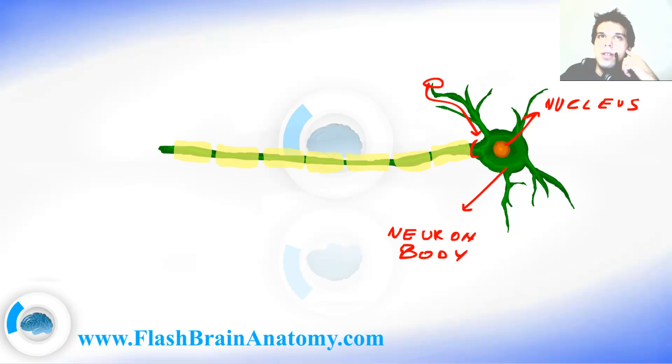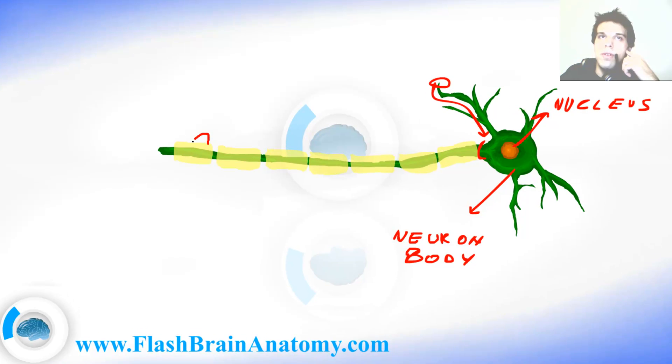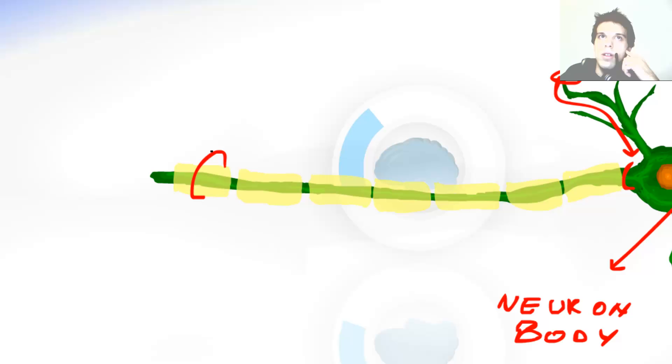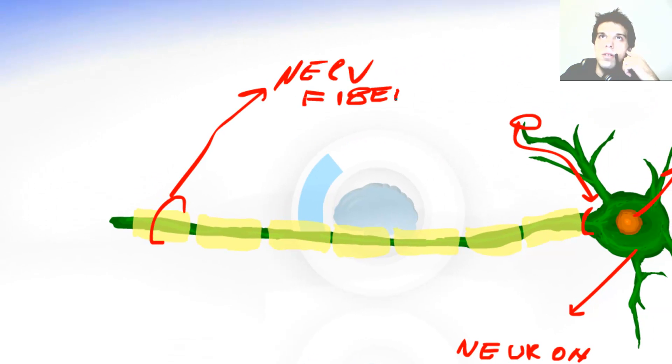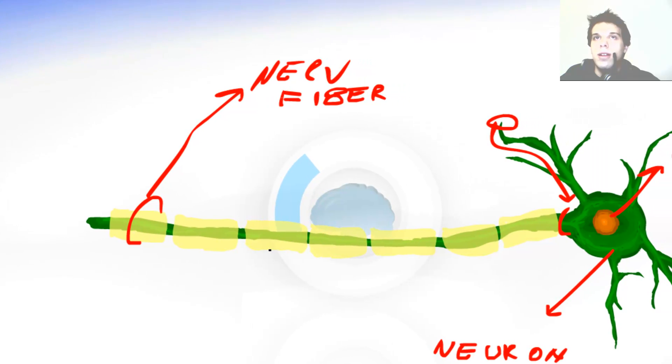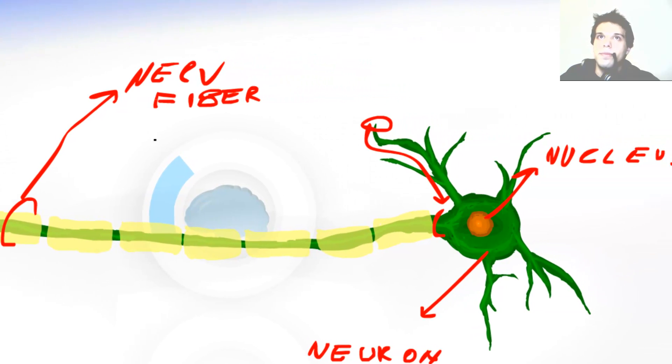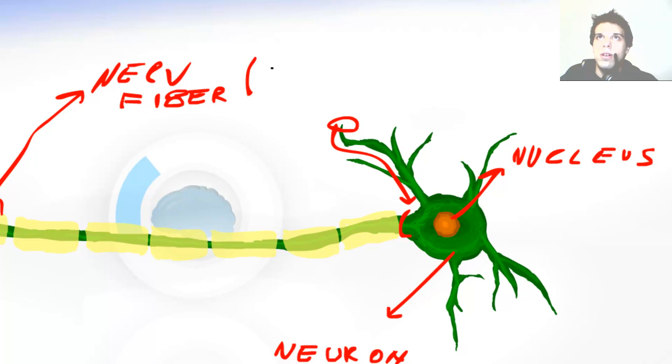Right around it there are glia cells that protect it and all together is called the nerve fiber. Now dependable whether there is myelin in the glia it can be non-myelinated nerve fiber or myelinated nerve fiber. And just to write it down, the nerve fiber was glia plus axon.